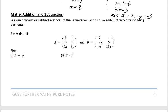OK, and the last bit for this very simple exercise is just matrix addition and subtraction. So we can only add and subtract matrices of the same order. So that's worth underlining there. So we can only add or subtract matrices of the same order. So to do so, we add or subtract the corresponding elements. Very, very easy.